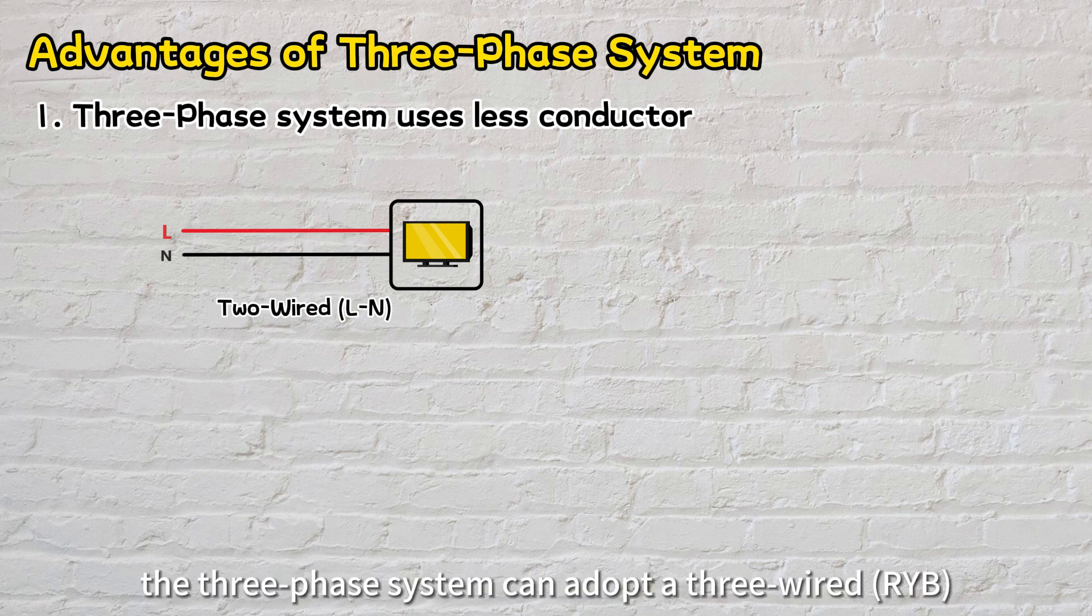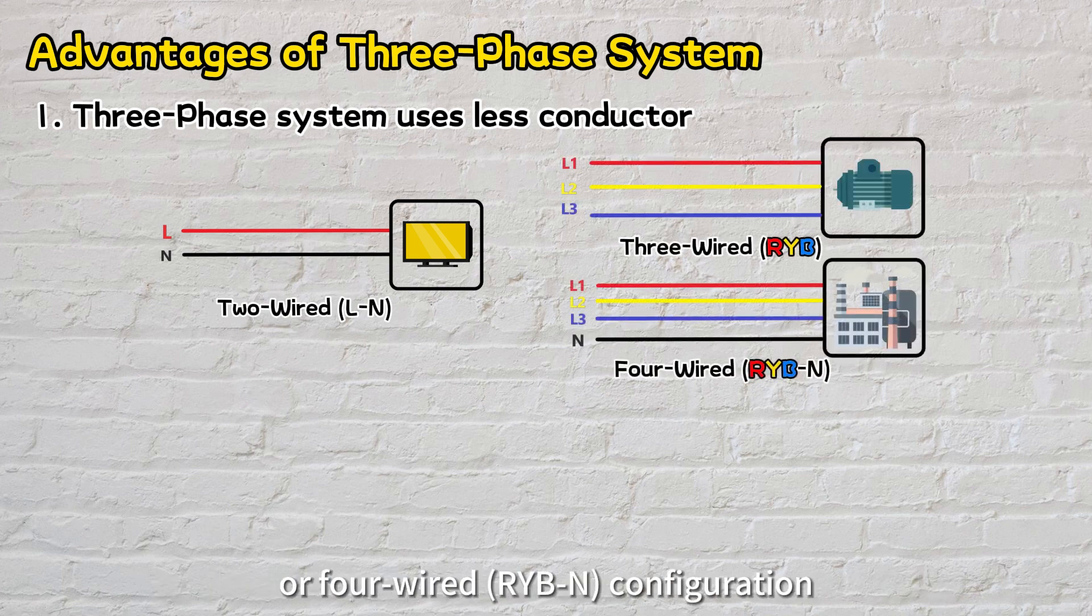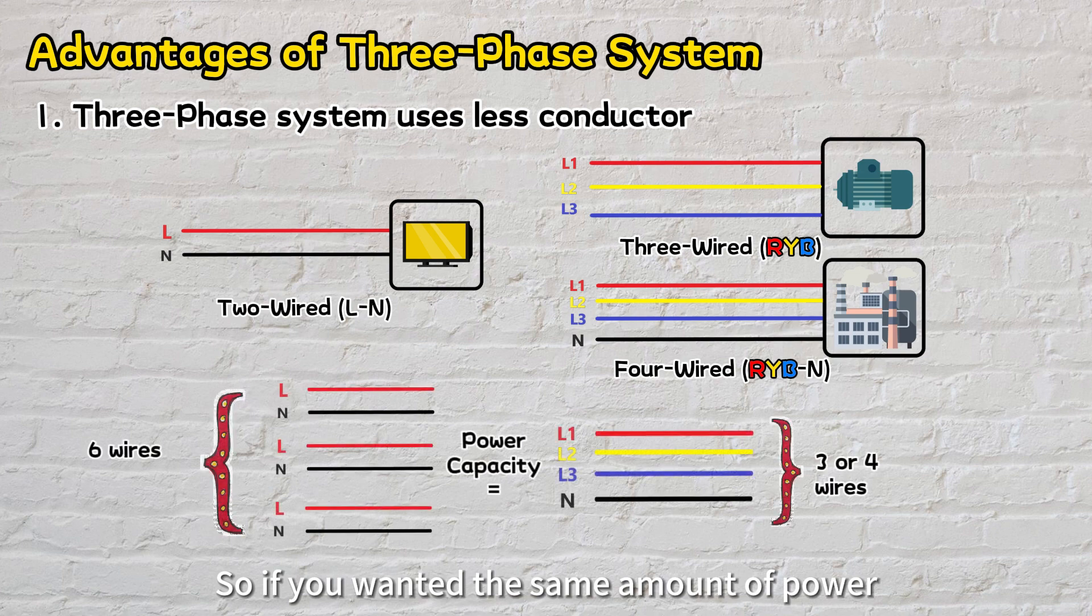On the other hand, the three-phase system can adopt a three-wired RYB or four-wired RYB-neutral configuration, yet it delivers three times the power of a single-phase system. So if you wanted the same amount of power with single-phase, you'd need three separate setups using six wires in total.